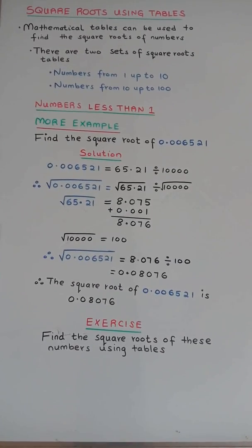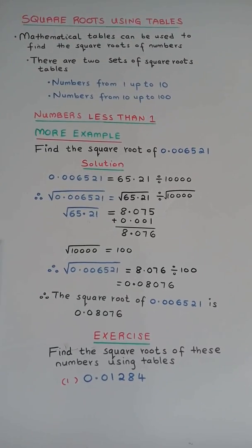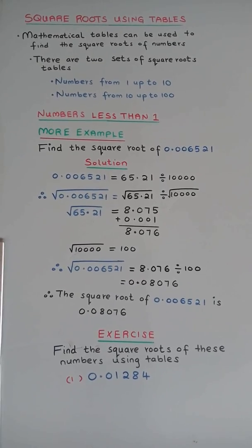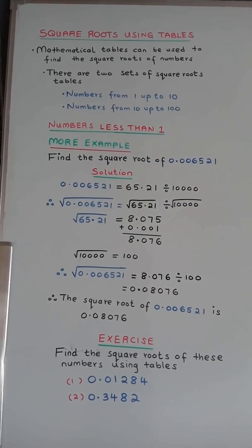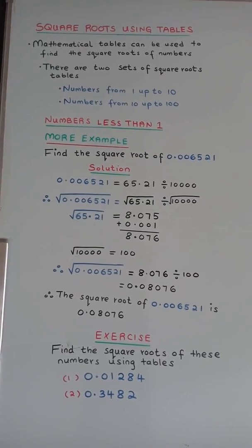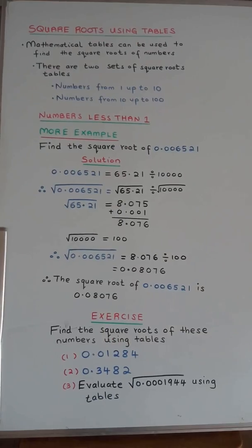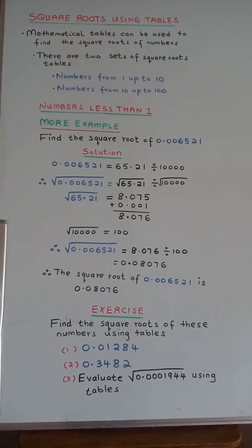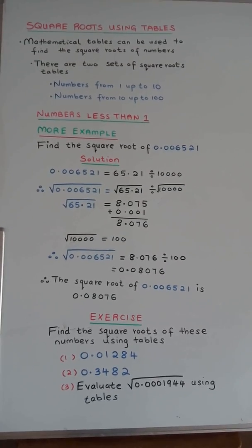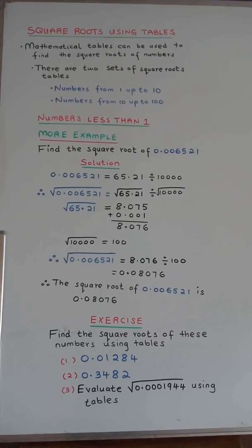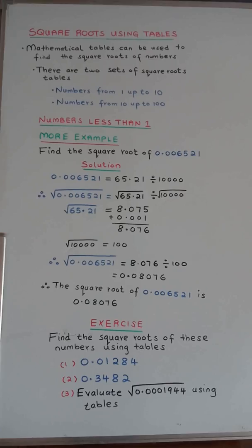Exercise: Find the square root of the following numbers using tables. Number 1: 0.01284. Number 2: 0.03482. Number 3: Find the square root of 0.00001944 using tables.